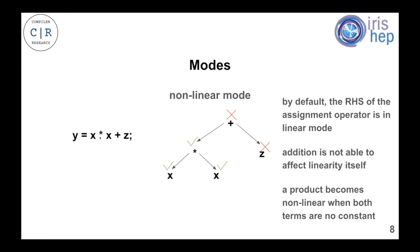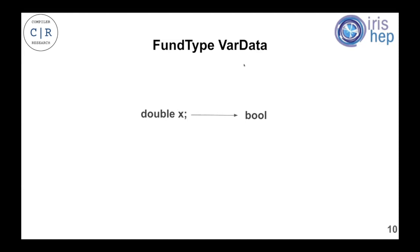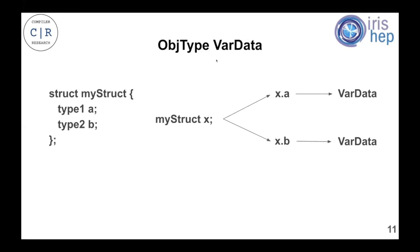Now I'm going to talk about VarData. VarData stores all the necessary information about one variable that we analyze. For a simple case like 'double x', we just need one boolean to keep track of all the information about x — I call these 'font type' which stands for fundamental type. We might also have object types: suppose we have a structure with two fields a and b with different types. In this case x cannot be represented by just one boolean, so for each field we have to store a separate VarData.